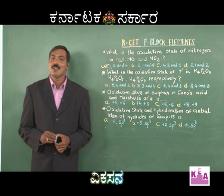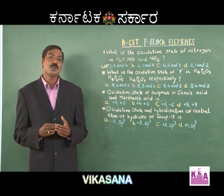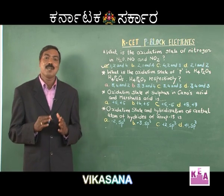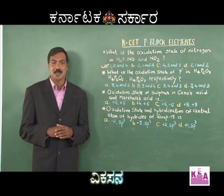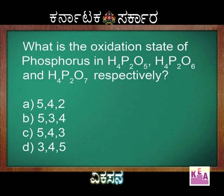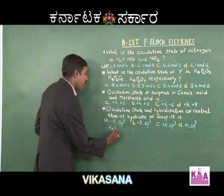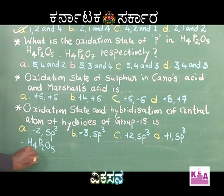Dear students, I hope you have understood the first question. As I am talking to you, you would have started working on the second question. Let's apply the same principles we adopted for the first question — calculating the oxidation state of phosphorus in the given oxy acids of phosphorus. For H₄P₂O₅, I work it as follows.